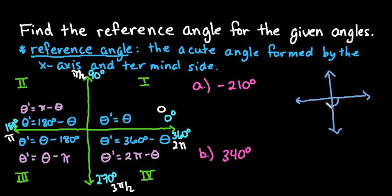So if I go here, this would put me at negative 90, negative 180, negative 210 would be somewhere in between negative 180 and negative 270. So we would be over here in quadrant two. Because of the fact that we're dealing with a negative angle, what I would do is I would find the positive angle that this corresponds to.